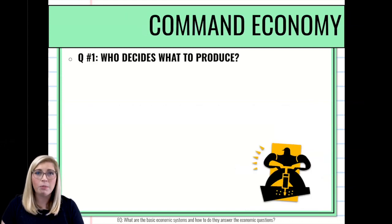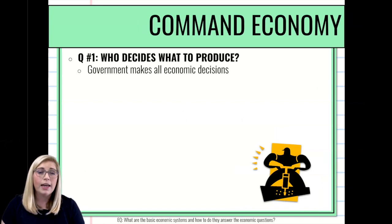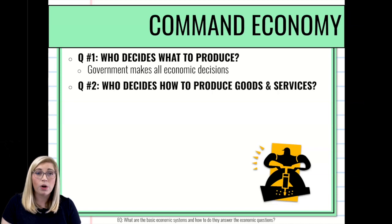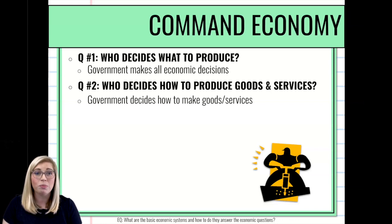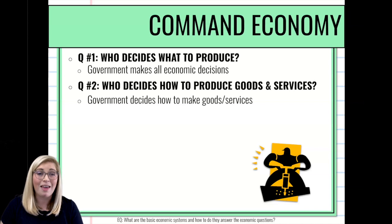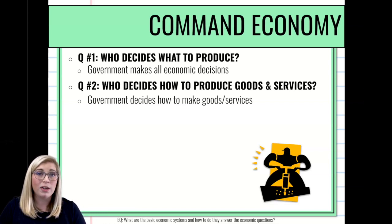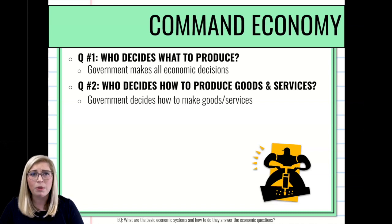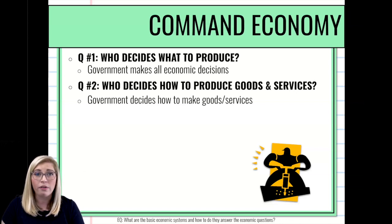Command economies: in a command economy, who decides what to produce? It comes down to the government. The government has 100% control, not only of the government but also of the economy. The government owns all the factors of production, so they decide how to distribute and utilize them. For example, if the government says we don't need 17 different types of jeans — unlike the mall today where you could find 17 basically identical pairs — a command economy says no, that's a waste of time: here are generic jeans, wear those, and we'll use the resources for other things.